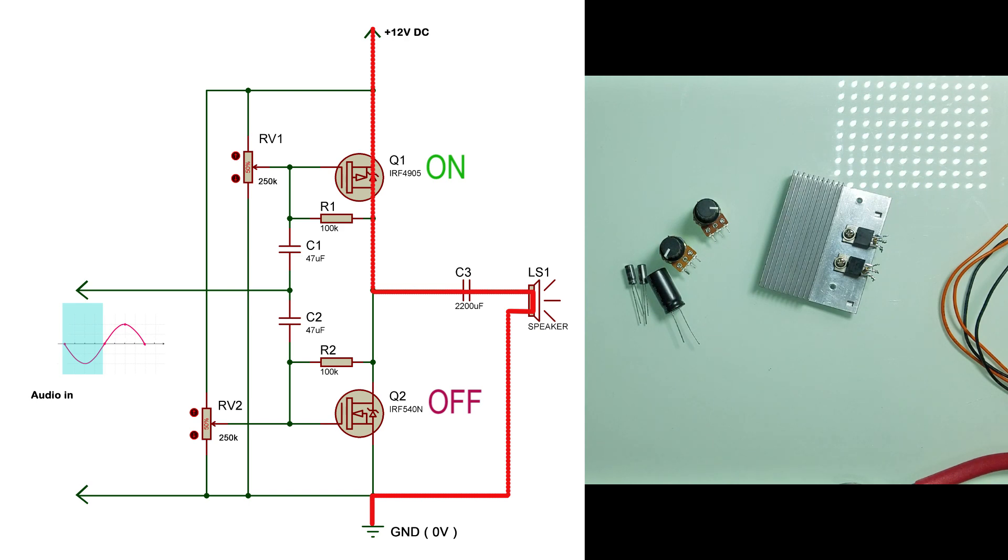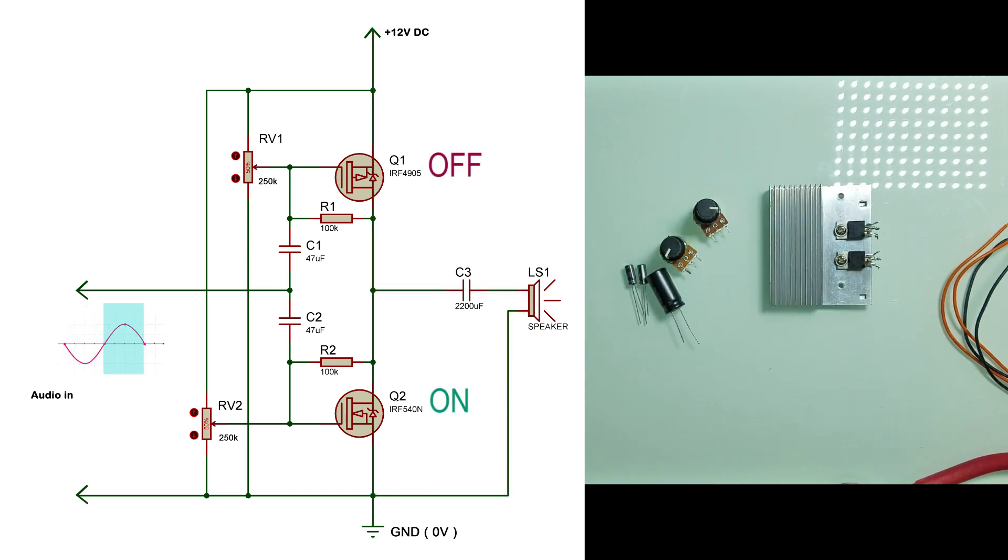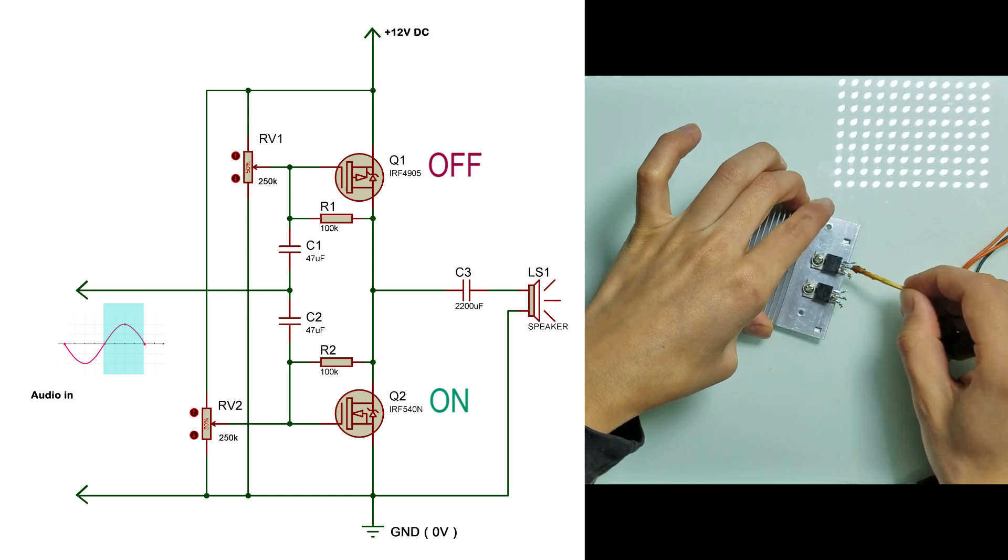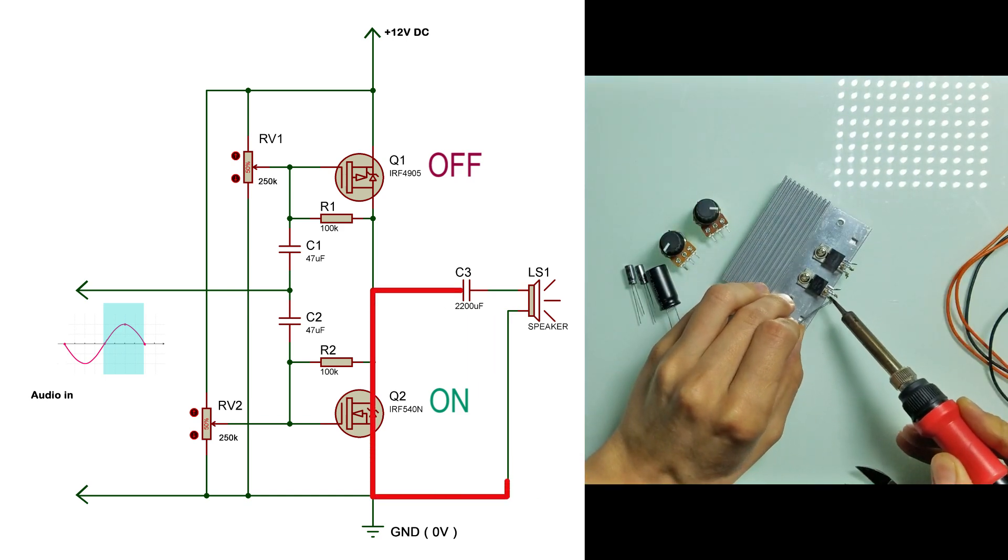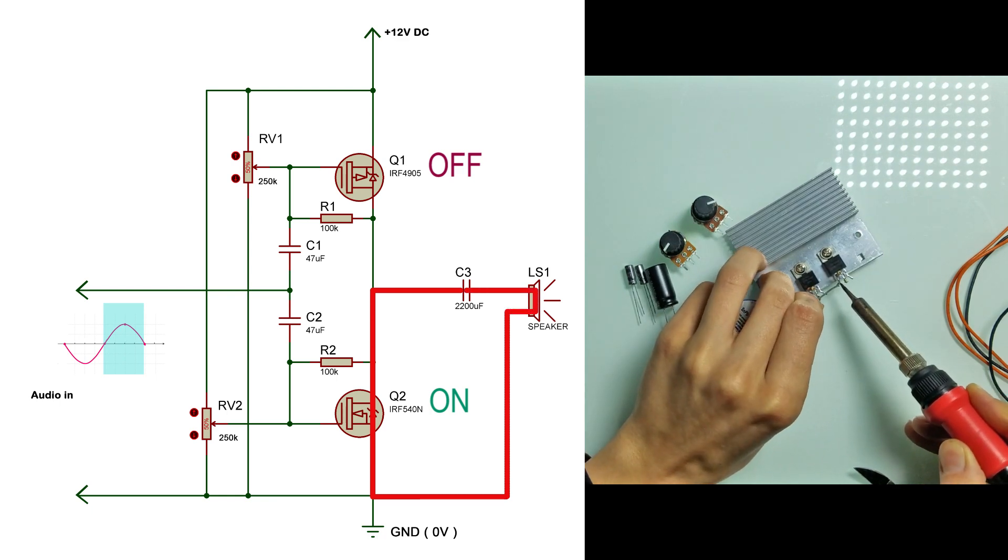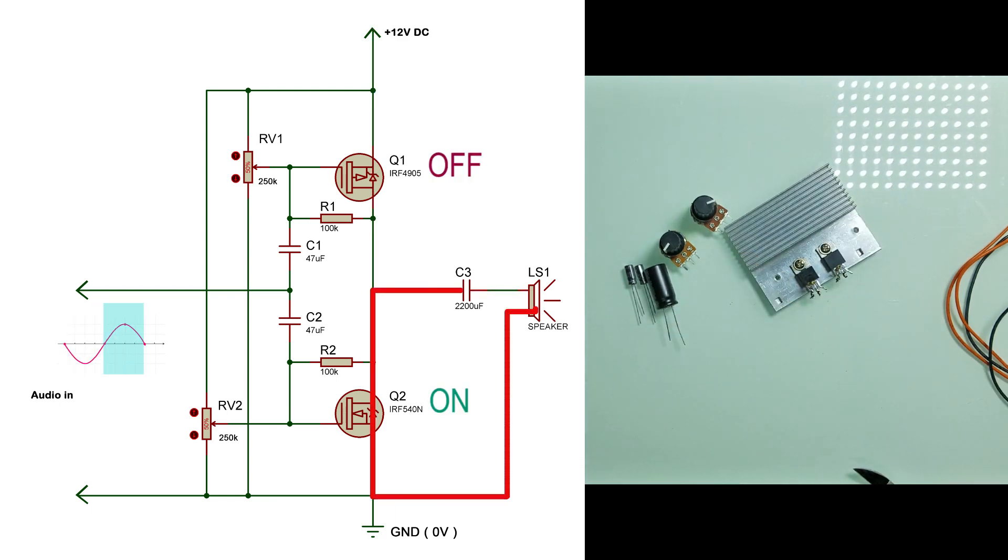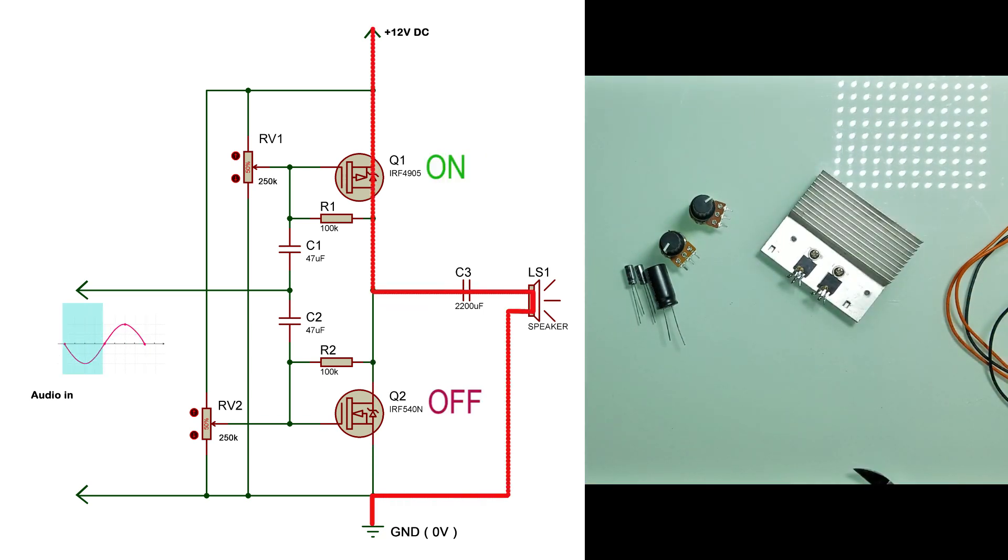Then when we have positive half of the cycle we have the opposite. Q1 turns off and Q2 turns on. Now capacitor C3 discharges and current flows through Q2 and the loudspeaker. Also notice that when capacitor C3 charges current flows through the speaker in one direction and when it discharges it flows in the opposite direction.